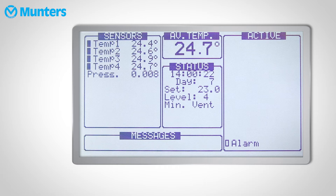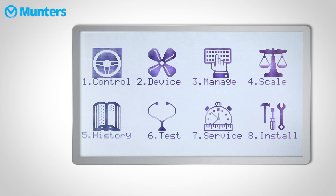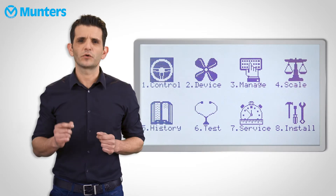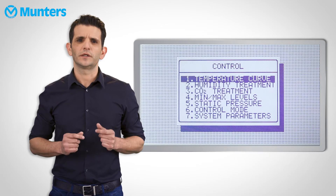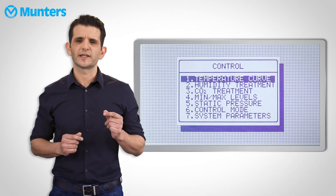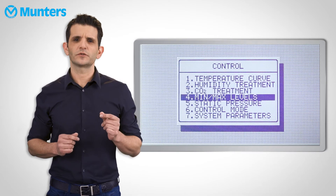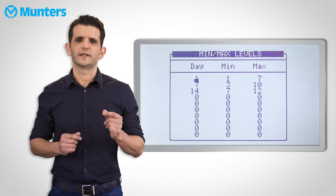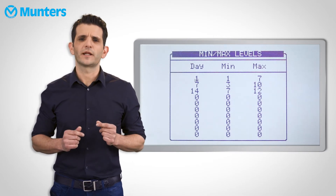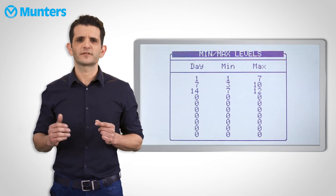To increase the maximum, press the menu button and go to Control menu. In Control, select Min-Max Levels, scroll to the appropriate day, and simply change the maximum.